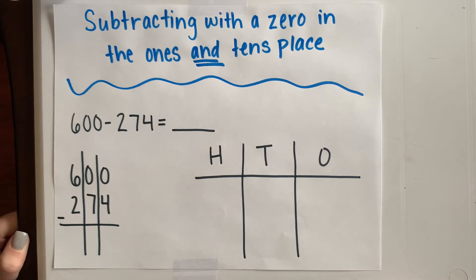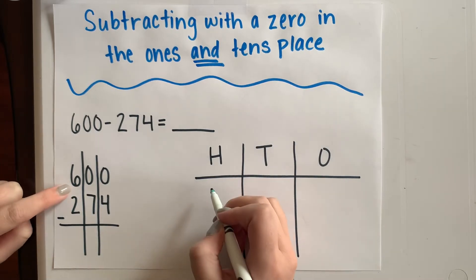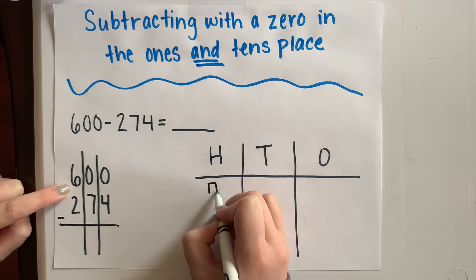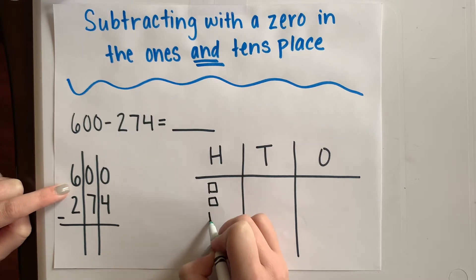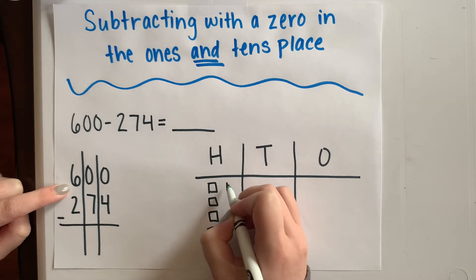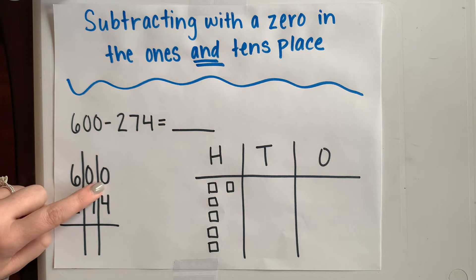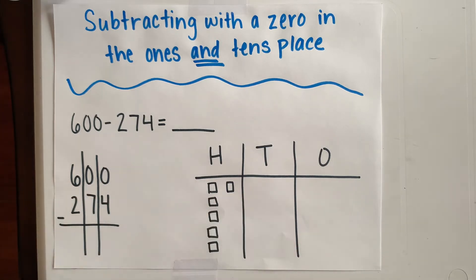So just like in my previous two problems, I have to put my 600 into my place value drawing. I have six hundreds: one, two, three, four, five, six. I have no tens and no ones, so I don't put anything into those columns.